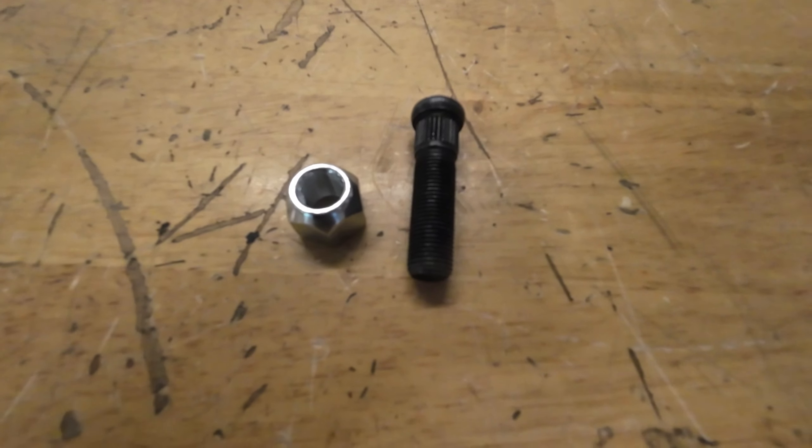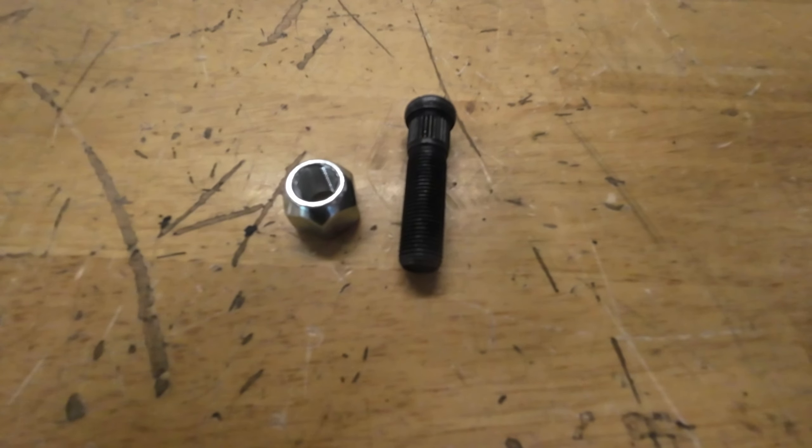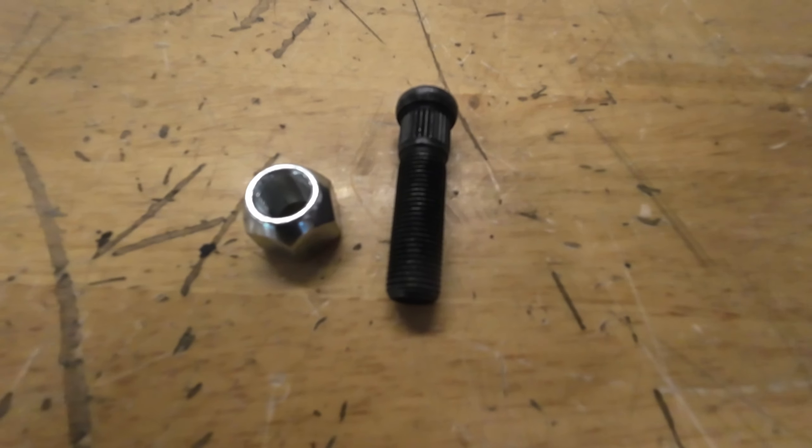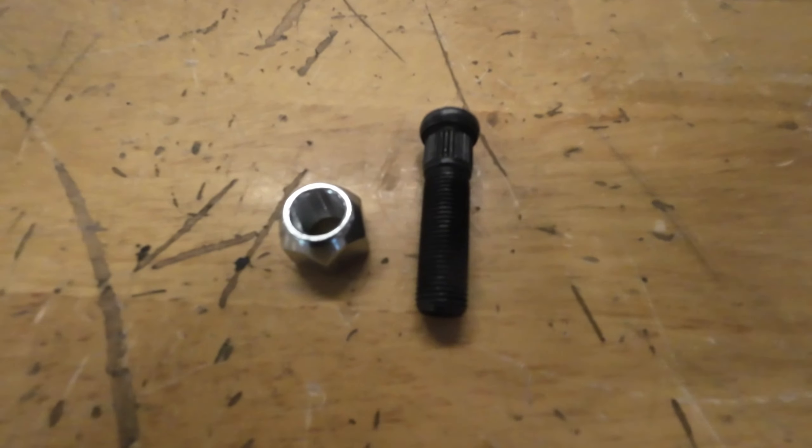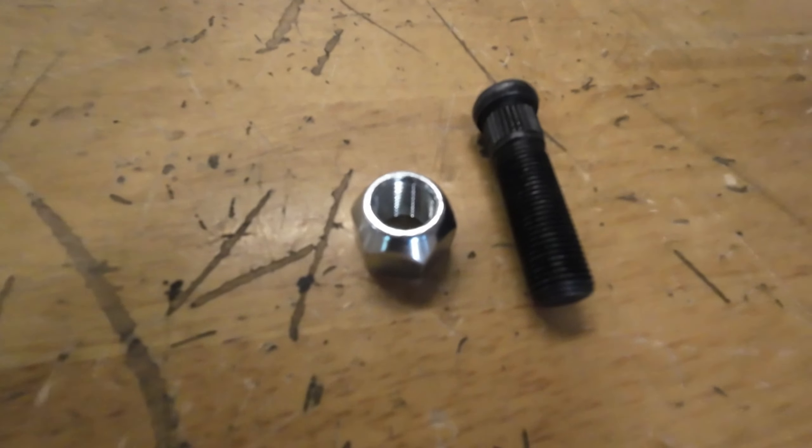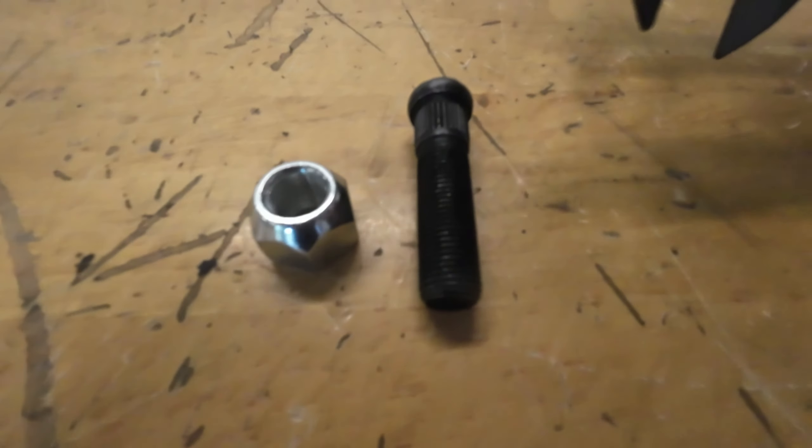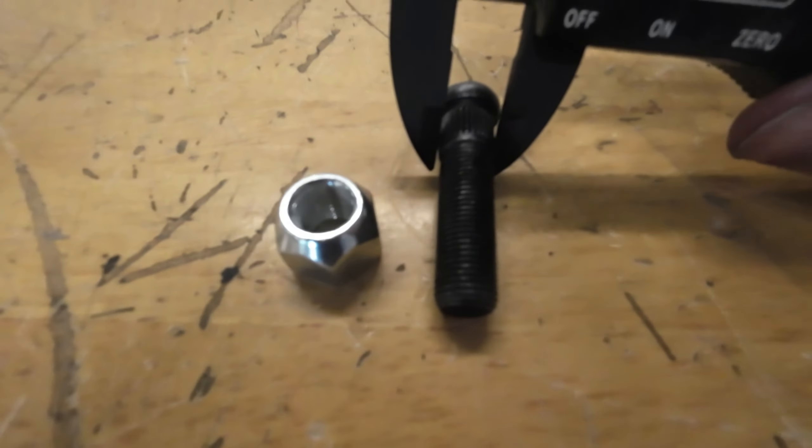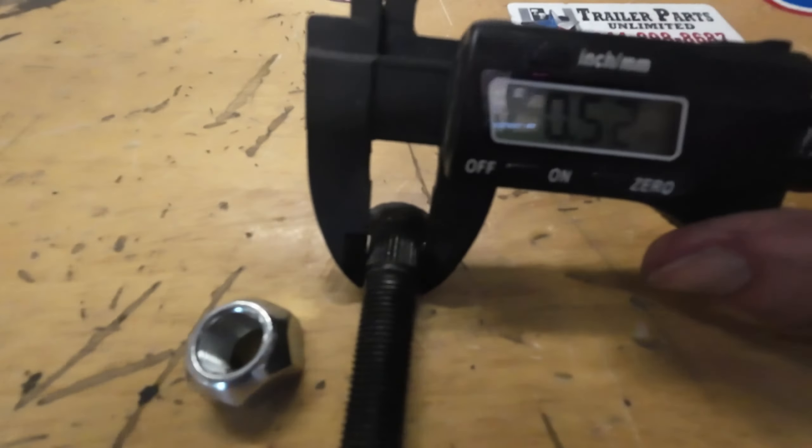Today we're looking at part number 246-00CN. This is the half inch stud with a half inch cone nut. The knurl diameter on this stud is 0.52 inches.